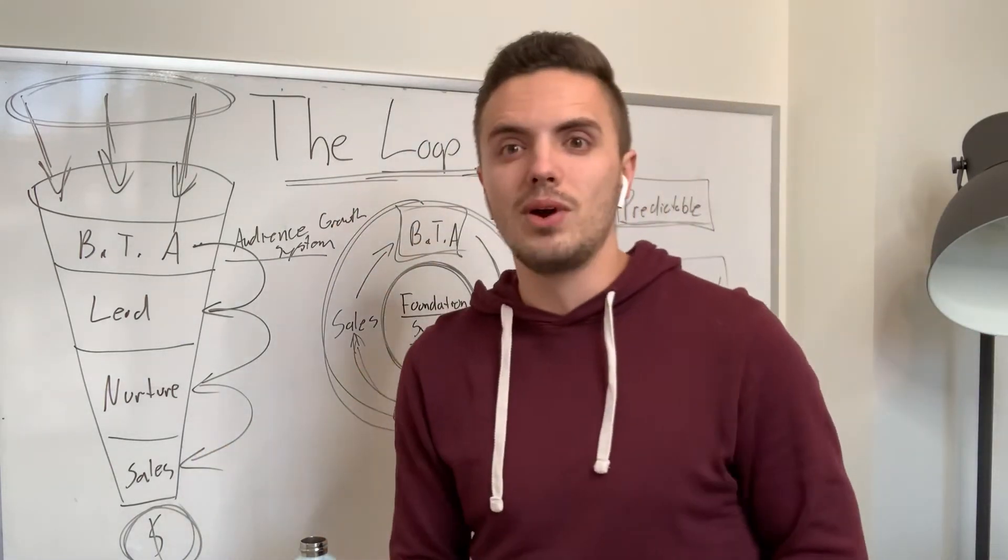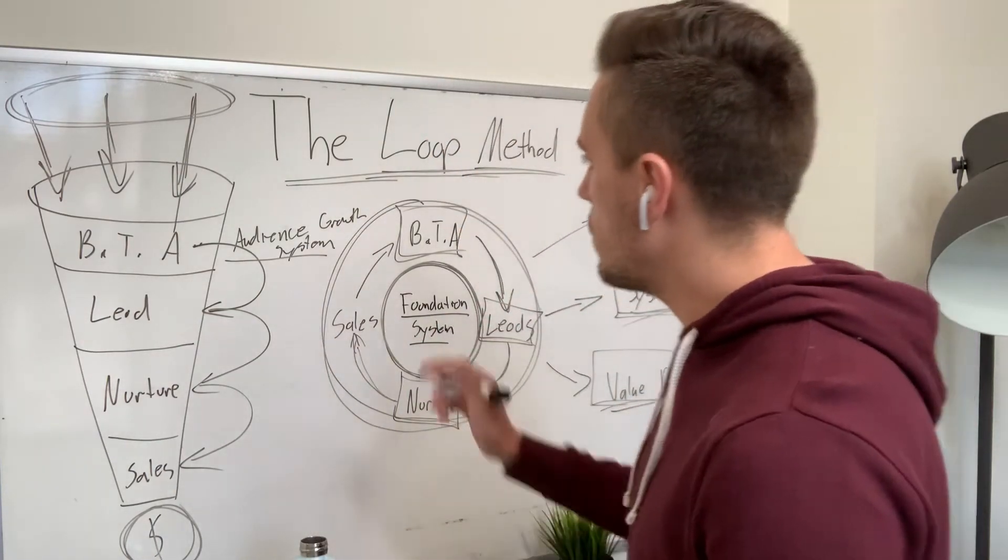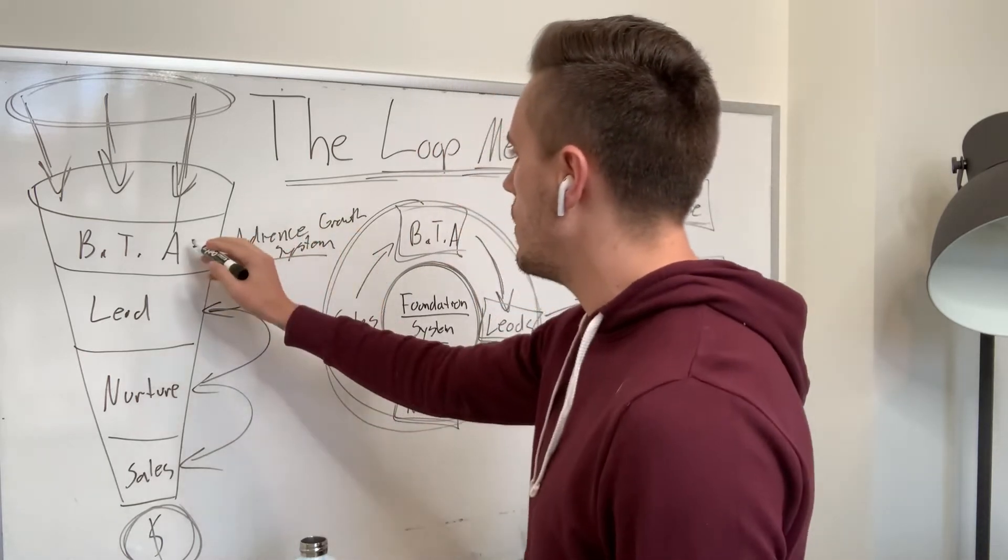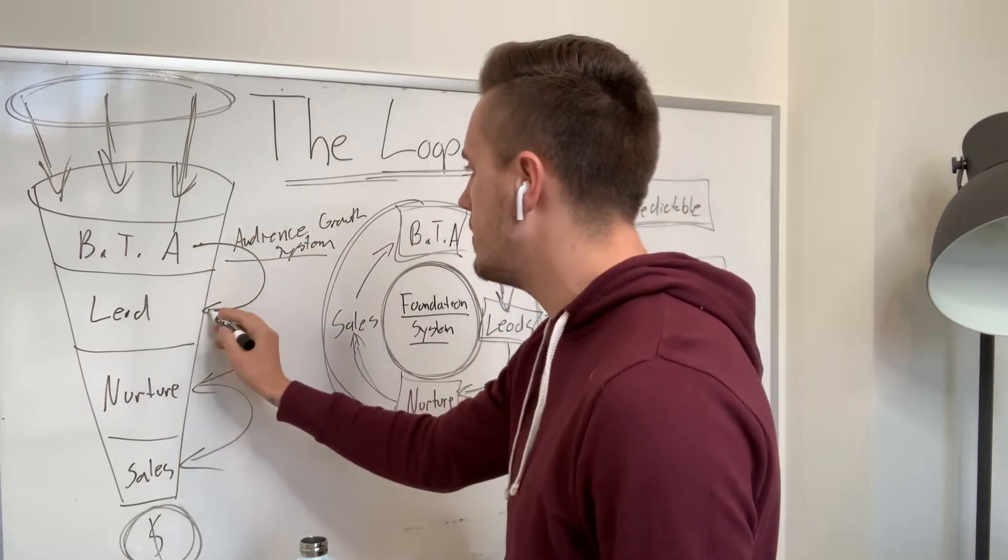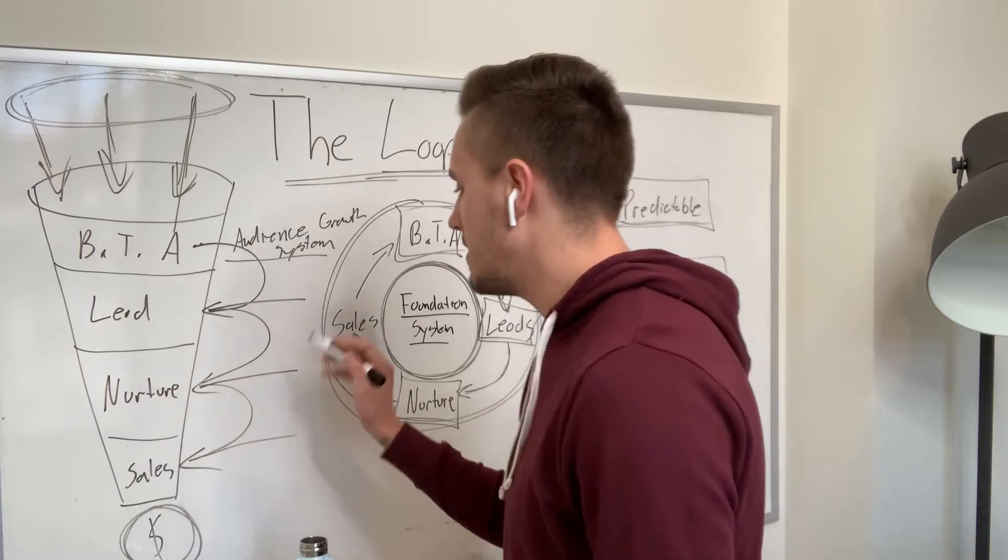And obviously, at that point, that's when we talk about the program, see if it's a good fit. And if it is, they get it. Now, here's the thing, so every step has a system. So the first step is the audience growth system. Then the second step is the lead generating system. The third system is how to nurture them. The fourth system is sales.